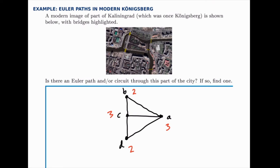So in this case there are exactly 2 of them that have odd degree, A and C, so there's an Euler path.